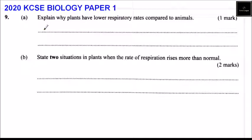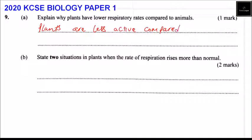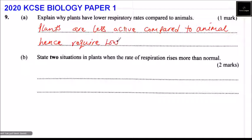The reason why is that plants are less active than animals, hence require a lower amount of energy. So you can say: plants are less active compared to animals, hence require a lower amount of energy. That's how you answer that, and you'll be able to get one mark.